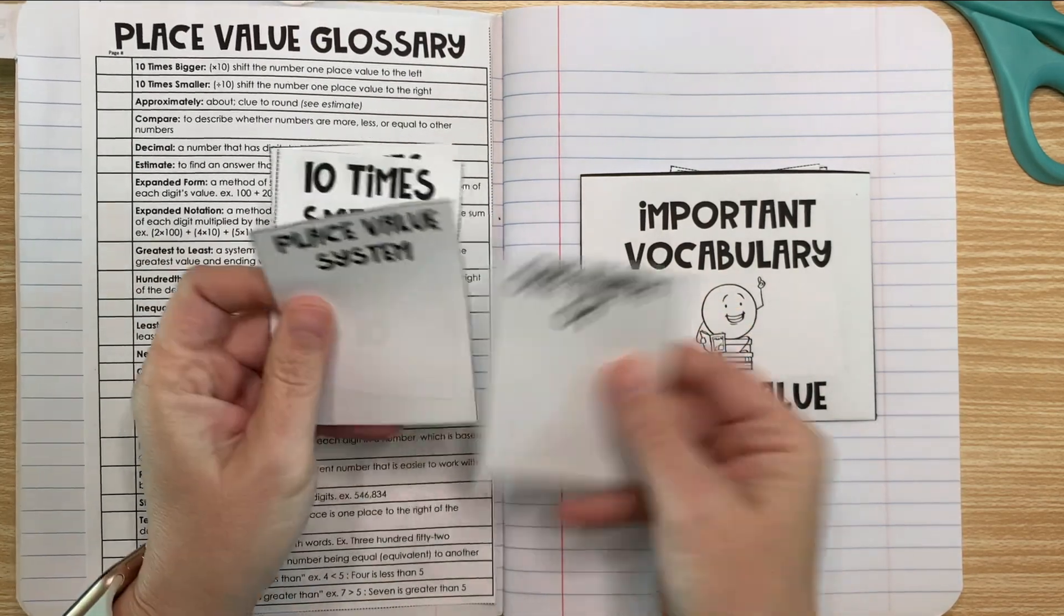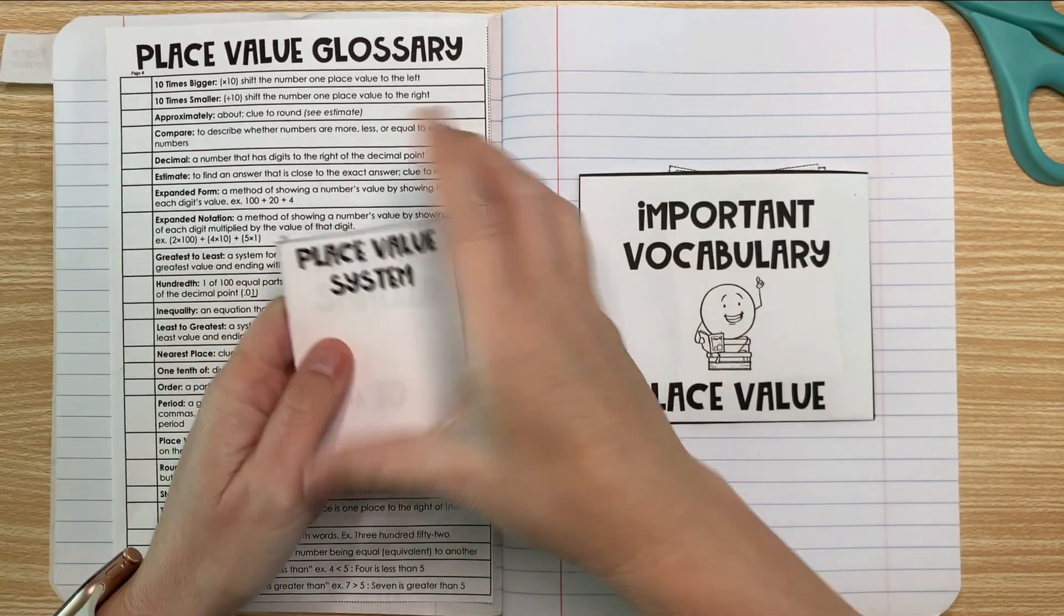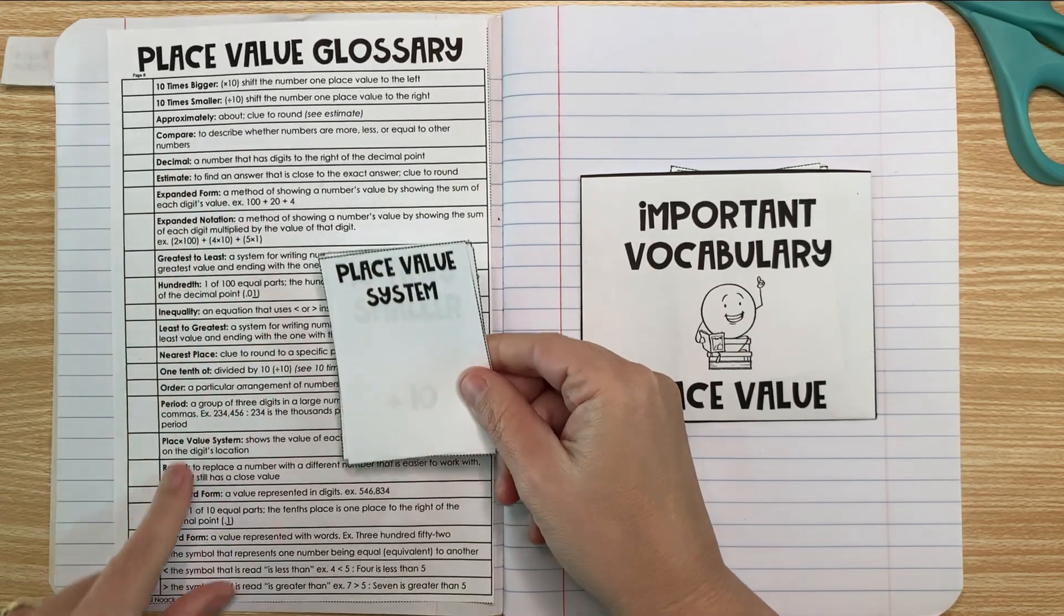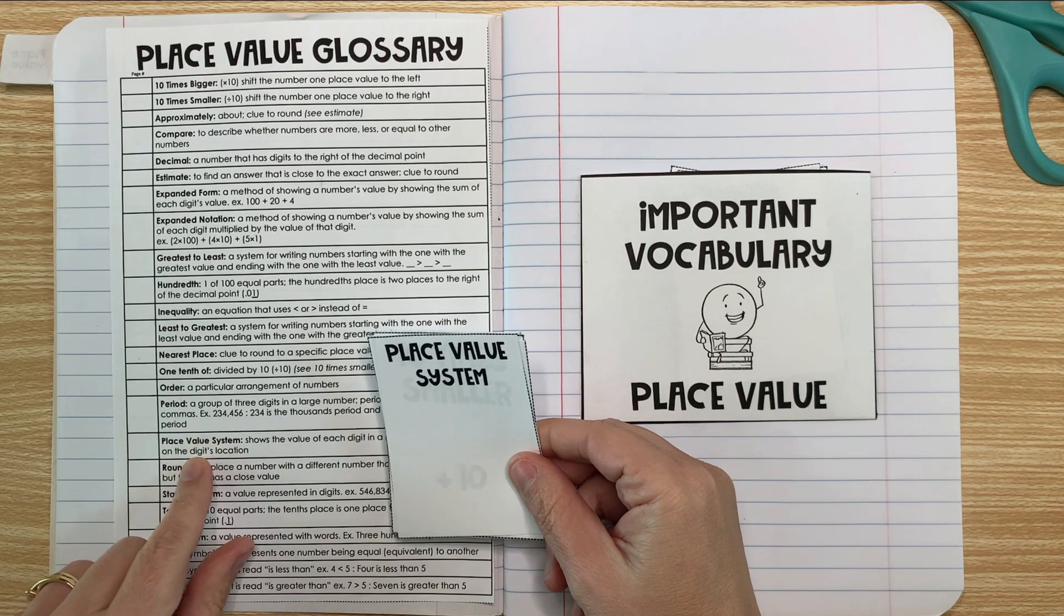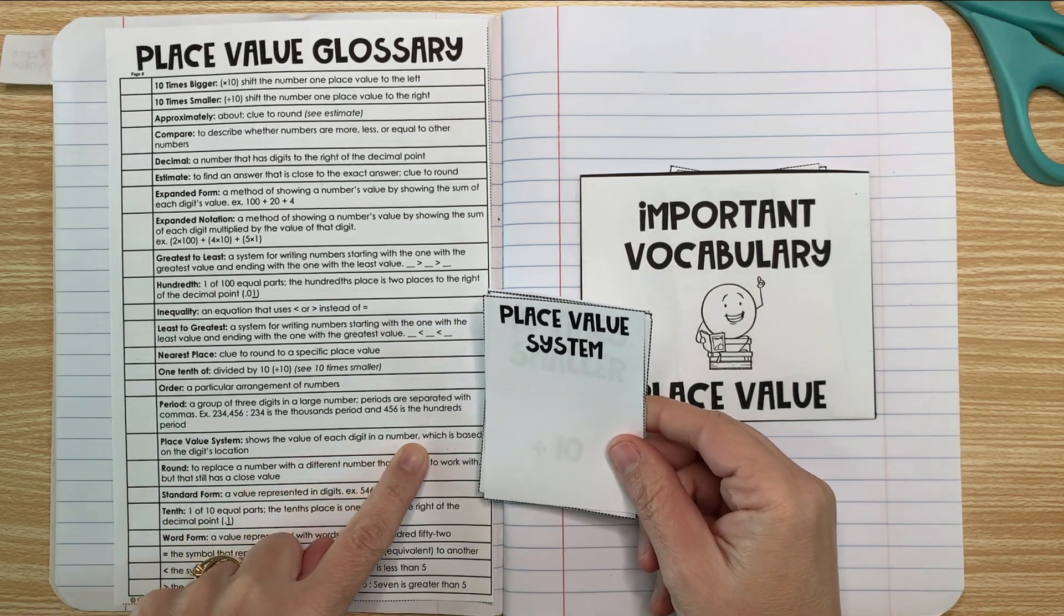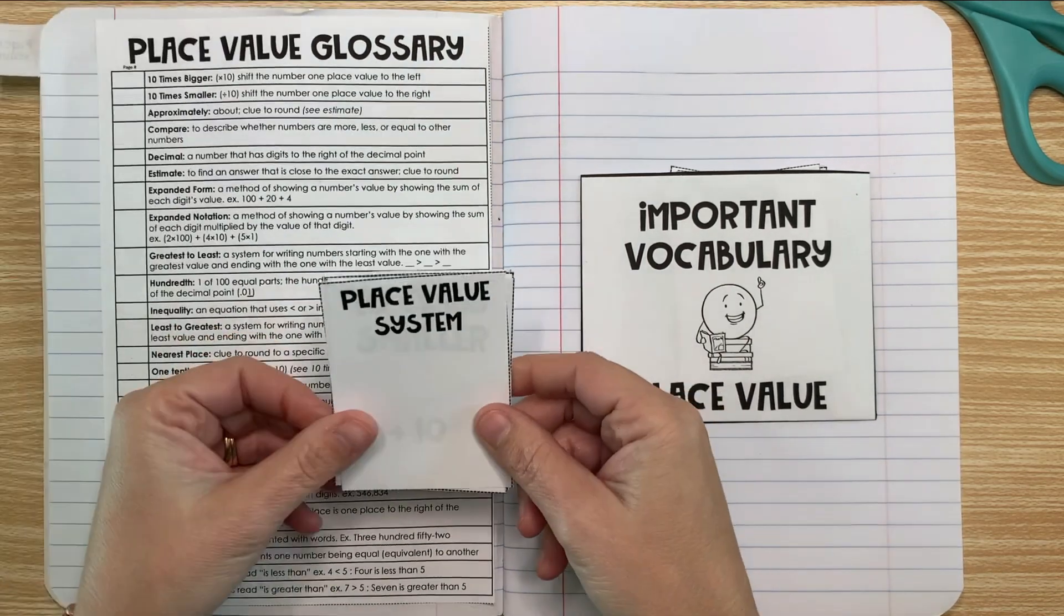So the first one we should look at is the place value system because we're going to be studying that today. If we look in our glossary, we can see that the place value system shows the value of each digit in a number, which is based on the digit's location.